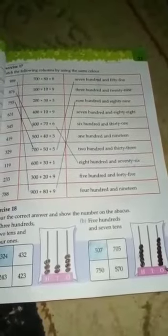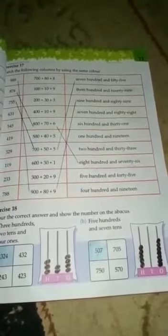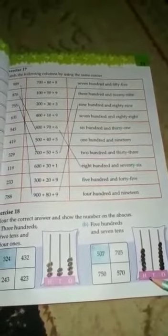Next, part B: 500 and seven tens. First of all, find out which number is correct. This answer is correct, you will color this box. Now you will draw these numbers on the abacus. How many ones are there? Seven, so you will draw seven beads on ones. Tens is zero, you will not draw any bead. Hundreds are five, you will draw five beads on hundreds.